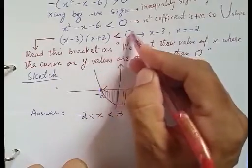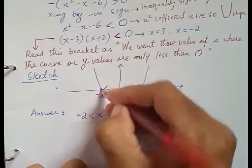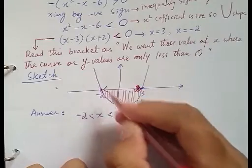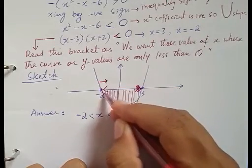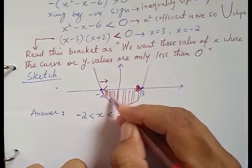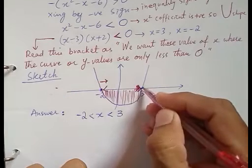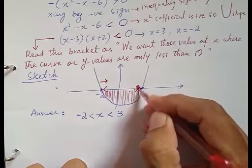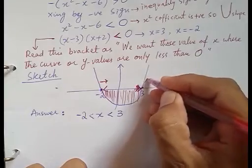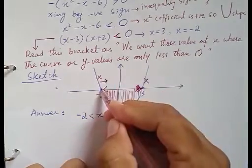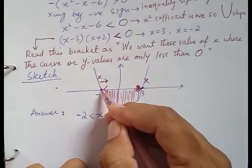We need values where y is less than zero. On minus two the curve equals zero; to the left of minus two it is greater than zero. But moving to the right side, in the shaded part, y is less than zero — this continues until three. Just before three it is still less than zero, but at three it becomes zero. So minus two and three are not included; the solution is all values strictly between minus two and three.